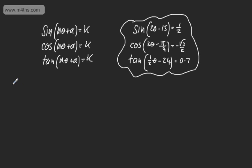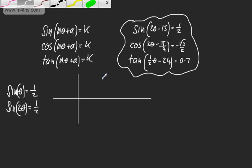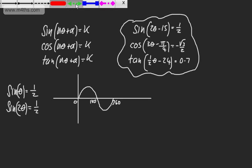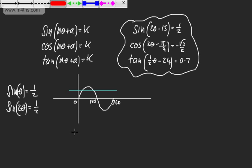Let's consider two different graphs. If we look at sine theta equals one-half in the interval 0 to 360, and sine of 2 theta equals one-half in the same interval, we're going to get two different results. For sine theta, drawing the curve from 0 to 360, we can see there are two solutions — one at 30 and one at 150, which are our special angles.